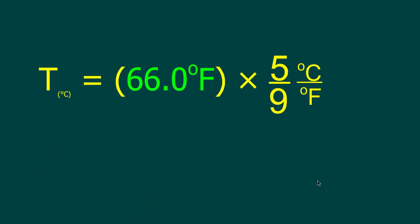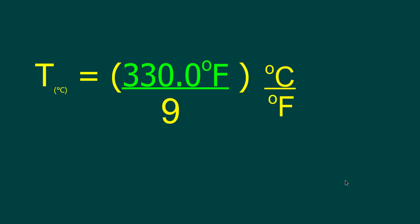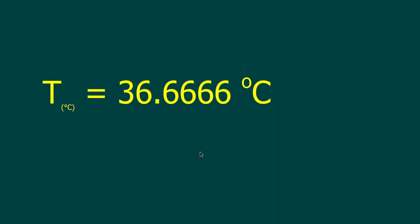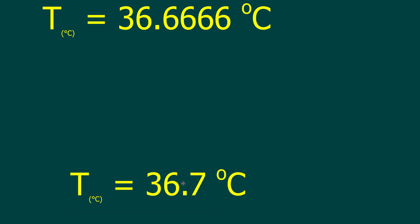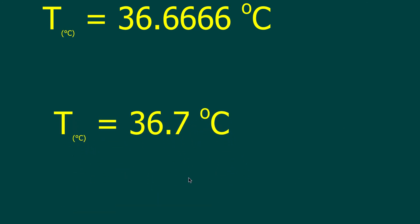98 subtract 32 is 66 degrees Fahrenheit. Now we've got 66 degrees Fahrenheit, and we're going to multiply it by the 5 on top. 66 times 5 is 330 degrees Fahrenheit. Now the degrees Fahrenheit on top cancels with degrees Fahrenheit on the bottom, so we have 330 in degrees Celsius divided by 9. When you put that into your calculator, it gives you 36.6666 degrees. Our original question was only three significant digits, so our final answer will be 36.7 degrees Celsius — this is approximate body temperature in degrees Celsius.